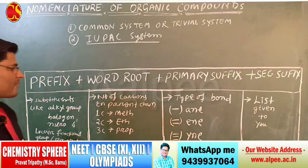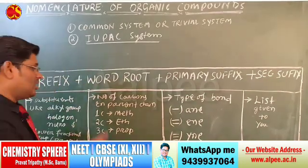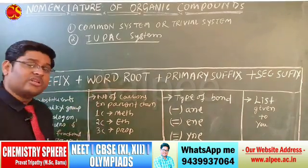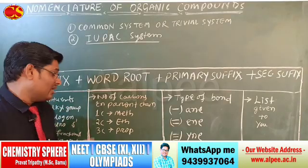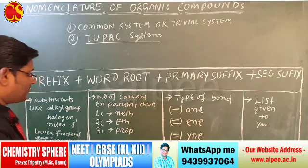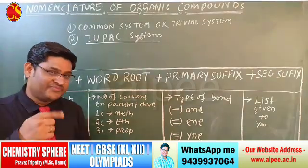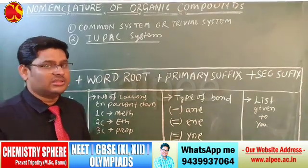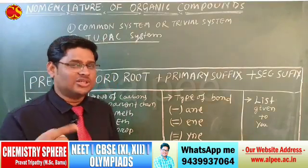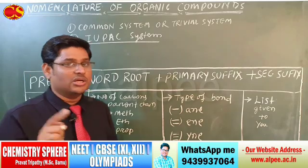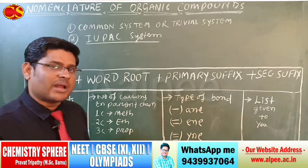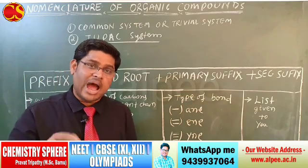The word root indicates the number of carbons in the parent chain. If one carbon is present, that is 'meth'; two carbons is 'eth'; three is 'prop'; four is 'but'; then pent, hex, hept, oct, non, dec, undec, dodec, tridec, tetradec, and so on. If 20 carbons are present, it is 'icos.'